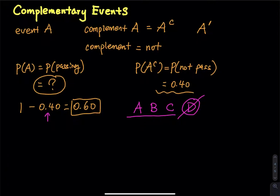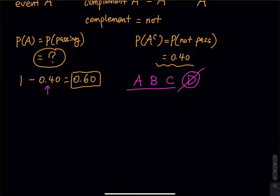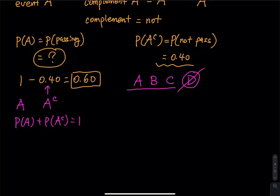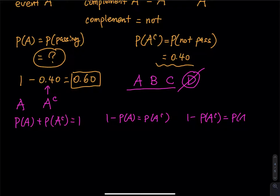Based on this, here is how the event and its complement work: P(A) plus P(A^C) equals 1. So if you take 1 minus P(A), you get the complement. If you take 1 minus the complement, you get event A. Just like 0.6 plus 0.4 equals 1; 1 minus 0.6 equals 0.4; and 1 minus 0.4 equals 0.6.